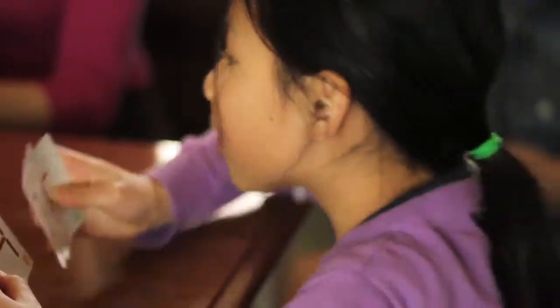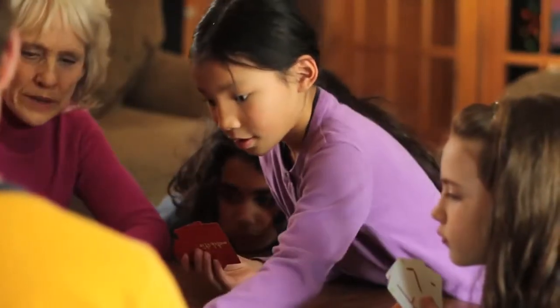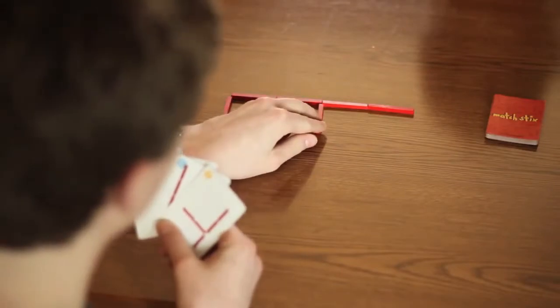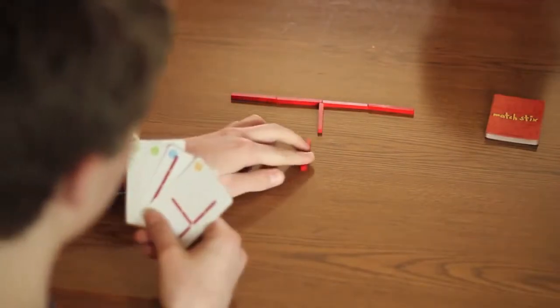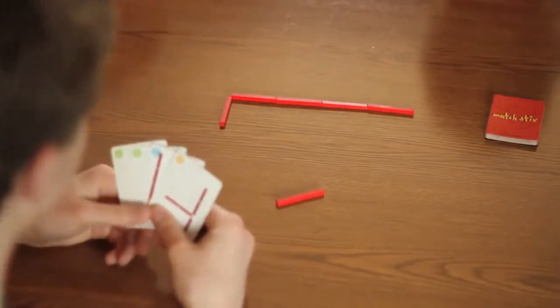On your turn, make two changes to the matchsticks layout with the goal of matching one or more of the puzzle cards in your hand. You may add a stick to the layout from the side, move a stick in the layout, pivot a stick in the layout, remove a stick from the layout, and place it to the side.